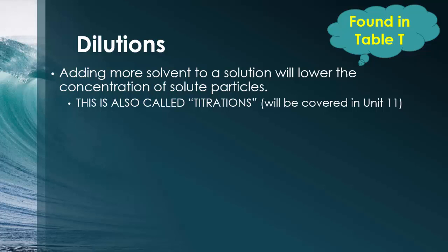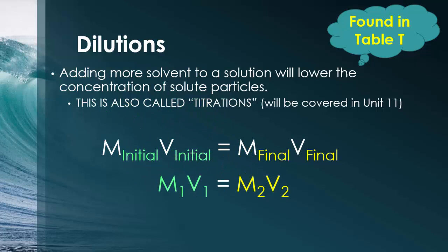Dilutions is also found on reference table T, but it's written under titrations because we're going to actually use it for acids and bases more often than we would for solutions. So, just like the word dilution, all what you're doing is you're adding more fluid to a solution. So, that means you're just adding more solvent, but you're not adding more solute. Therefore, your molarity is going to change. So, we have the molarity of the initial times the volume of the initial, which is equal to the molarity of the final and the volume of the final. We also just simply call it M1V1 is equal to M2V2. On the reference tables, though, for titration, it's labeled as As and Bs for acids and bases. Just ignore the As and Bs and write in 1s and 2s for now. So, please make sure this is found on table T as well.